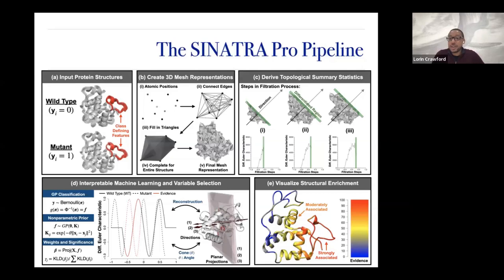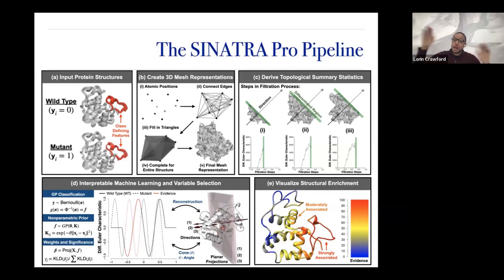We also extended this to create SINATRA Pro, used for proteins instead of other shapes. The concept is very similar — now instead of teeth from two different sets of primates, you have protein structures of two different mutation types, for example wild type versus mutant. There's an additional step in the protein structure problem: you need to construct a 3D mesh yourself because you're given atomic positions, not meshes. You use physical understanding of how close certain atoms are in terms of angstroms to define whether to draw a connected line between them. You'll identify actual physical residues that separate mutant versus wild type in terms of how they move over time.